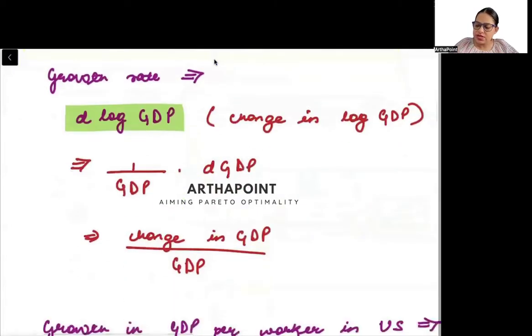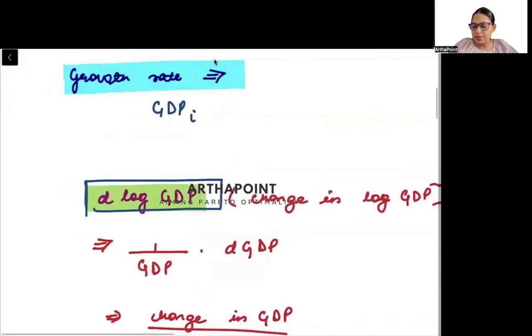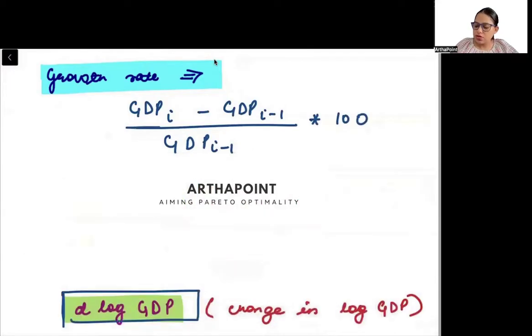First of all, let us try to understand how we can go ahead and measure economic growth. Economic growth is basically, as I told you, it is the change in GDP. So, GDP of year t minus GDP of year t minus 1 upon GDP of year t minus 1 into 100. This is the growth rate of GDP. Now, the numerator can be written as change in GDP upon GDP of year t minus 1 into 100.